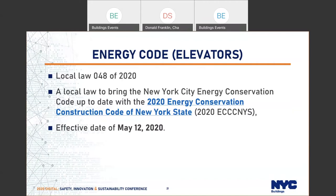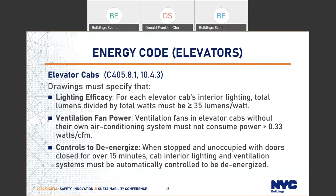The energy code was passed by Local Law 48 of 2020, effective May 12, 2020. This local law brings the New York City Energy Conservation Code up to date with the 2020 Energy Conservation Construction Code of New York State. It has impact on elevators and escalators: lighting inside the cab must meet certain efficiency requirements — brightness divided by total watts must be greater than or equal to 35. For fan ventilation, power should not consume more than 0.33 watts per cubic feet per minute of ventilation. There is also a requirement for cab lighting to turn off after no use.